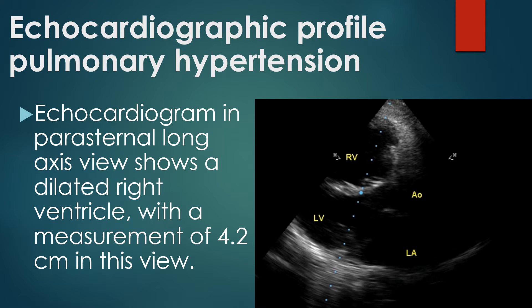Echocardiogram in parasternal long axis view shows a dilated right ventricle with a measurement of 4.2 cm. The right ventricle is hypertrophied and dilated due to severe pulmonary hypertension causing pressure overload. Normally, only a much smaller portion of the right ventricle is visible in this view. A better view to assess the right ventricle would be the apical 4-chamber view.